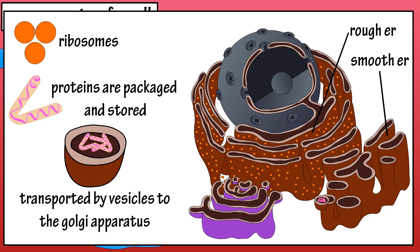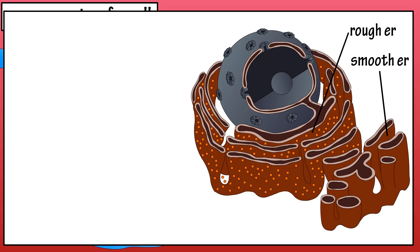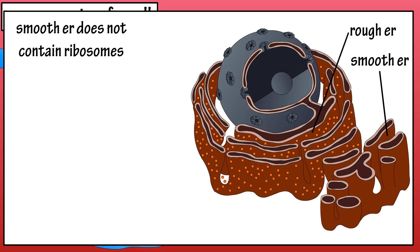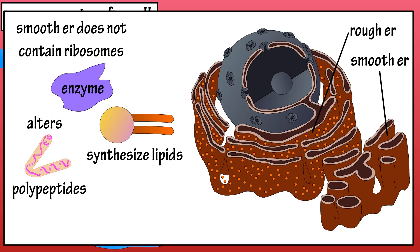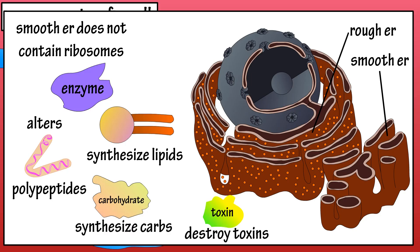Proteins are transported by enclosed membrane sacs called transport vesicles that pinch off from the smooth ER. These vesicles transport the proteins to another organelle called the Golgi apparatus for further modification. The smooth ER is a membranous organelle that does not have any ribosomes. It contains enzymes that alter polypeptides, synthesize lipids and carbohydrates, and destroy toxins. Most of the phospholipids and cholesterol that form cell membranes are synthesized in the smooth ER.